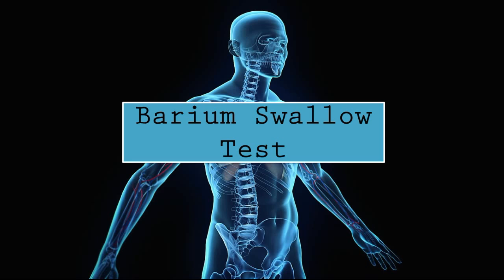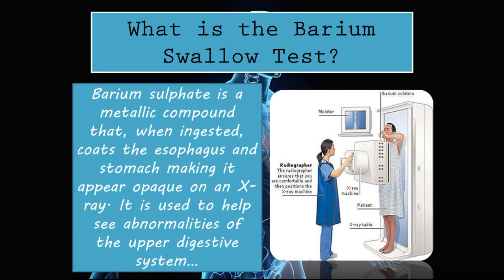Hey guys and welcome to How to Gastro. In today's presentation we will be talking about the barium swallow test — this is just a quick overview of the barium swallow test pertaining to all the esophageal pathologies. Barium sulfate is a metallic compound that when ingested coats the esophagus and stomach, making it appear opaque on an X-ray. It is used to help us see abnormalities of the upper digestive system.